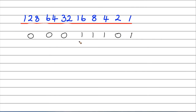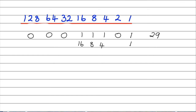My third example. Wherever there's a 1, you look at the values. So I've got 16, 8, 4, and 1. 16 plus 8 is 24, plus 4 is 28, plus 1 is 29. So that converts to 29.